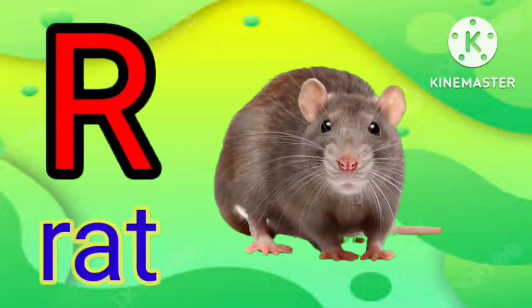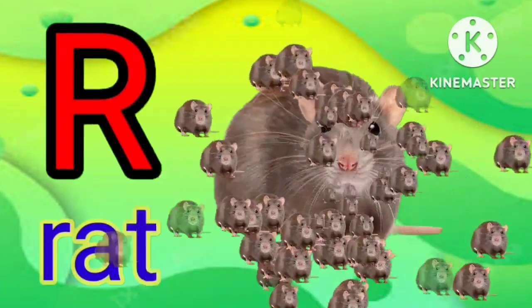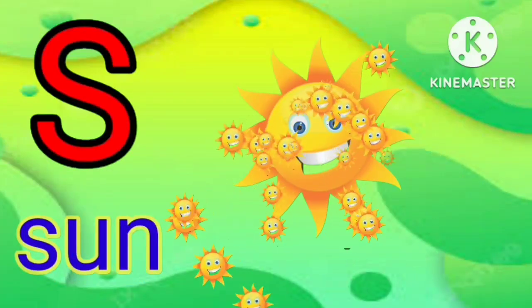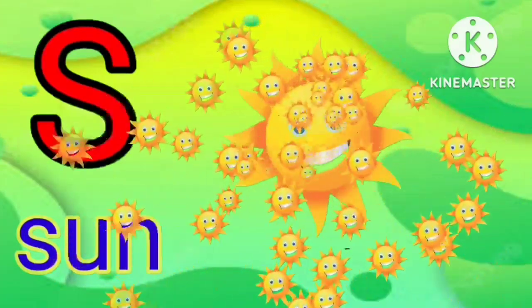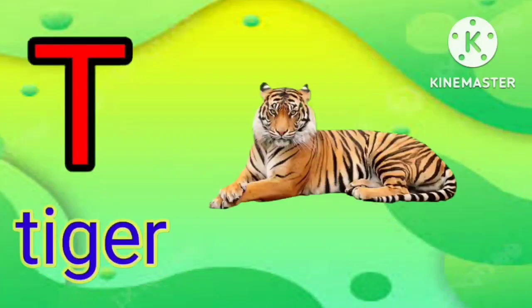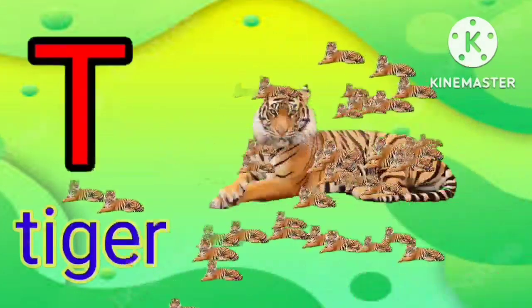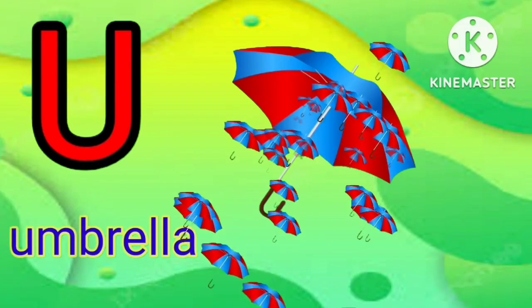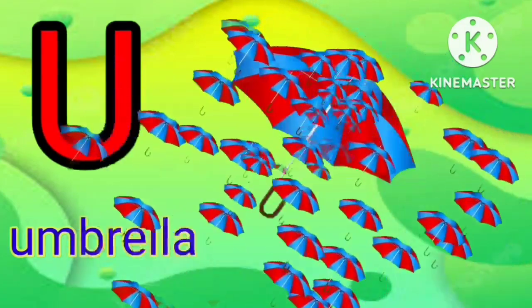R for right, S for sun, T for tiger, U for umbrella.